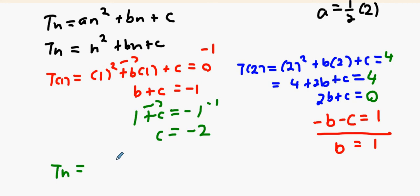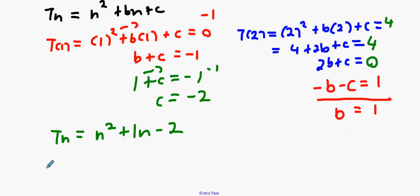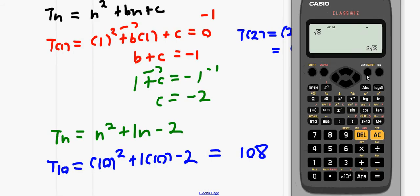What's N squared? What's BN? Plus one N. And what's C? Alright. How'd you find out what T10 is then? T10, replace the N's with 10s and what do you get? I think it's 108.